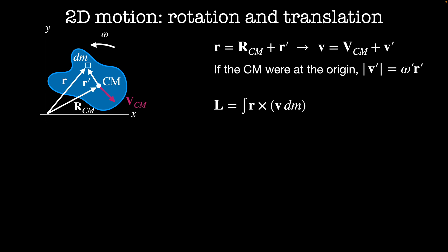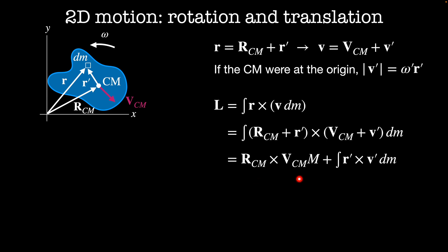We calculate the total angular momentum as the integral of r cross the linear momentum of each mass element. Expanding using the definitions of r and v, the first term R_CM cross v_CM integrates over dm to give the total mass. The cross terms cancel, leaving the integral of r' cross v' dm. This gives one term like the angular momentum of a point mass m traveling at v_CM at distance R_CM from the origin, and a second term that is the angular momentum of a rigid body rotating at angular speed omega about its center of mass.